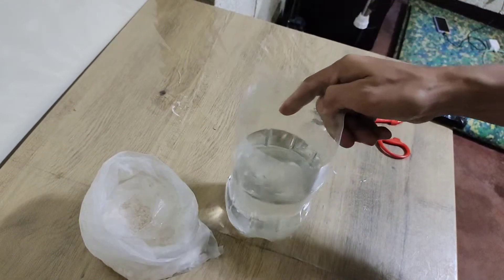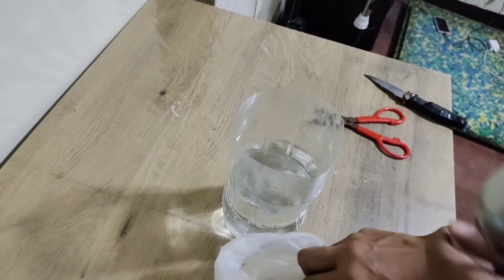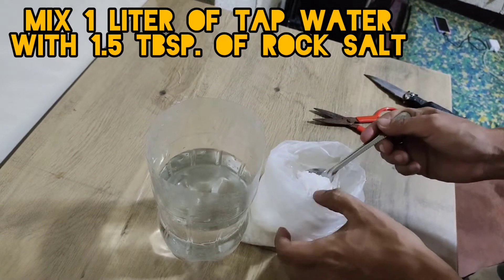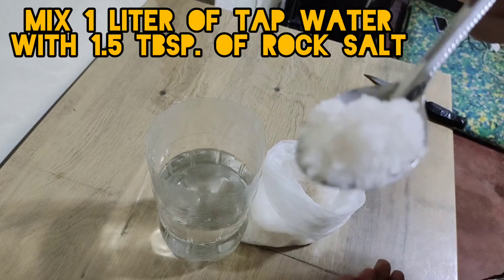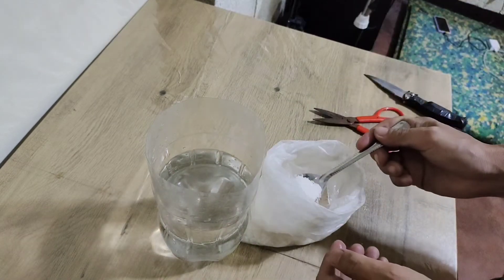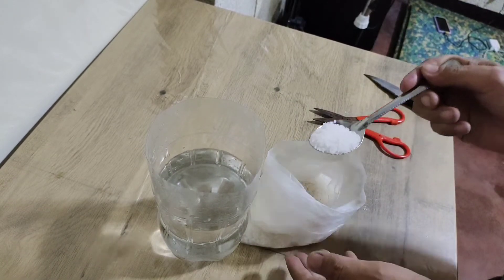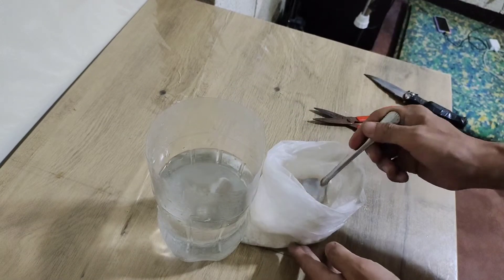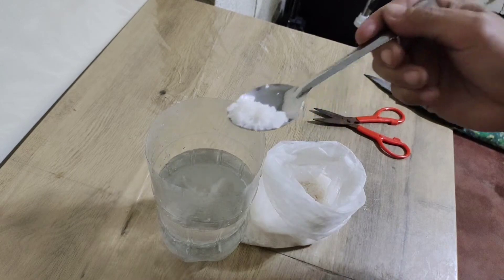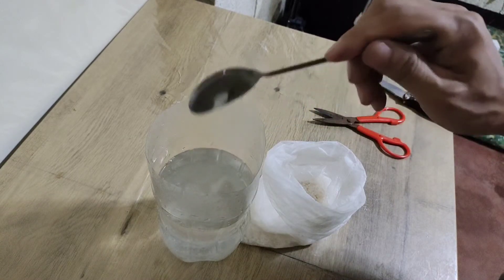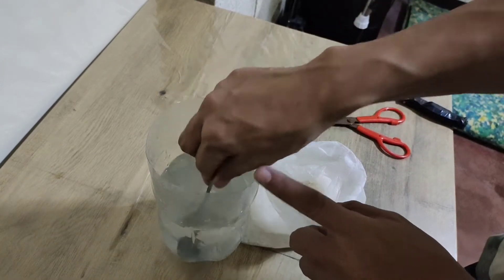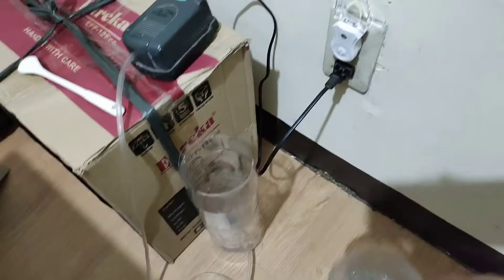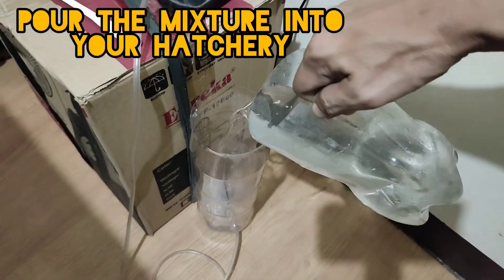So let us start hatching our baby brine shrimp. I just use tap water, around one liter of tap water, then one and a half tablespoons of rock salt. Do not use iodized salt.